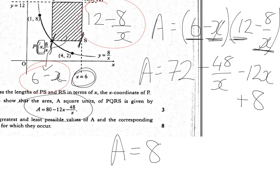So I can see 72 plus 8 is 80, minus my 12x minus 48 over x. And that was the result that I was looking for.